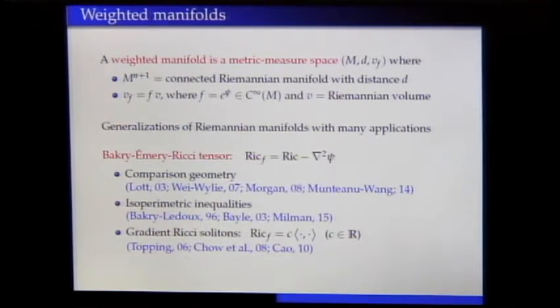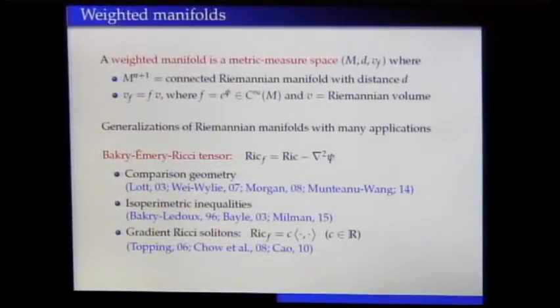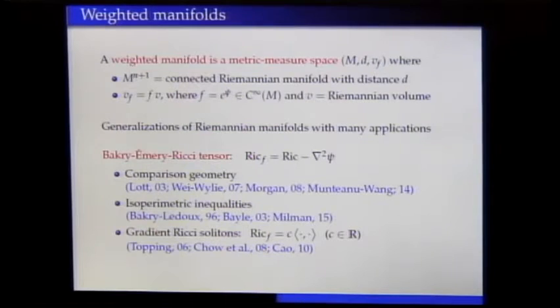The Bakry-Emery Ricci tensor is useful to provide generalizations to weighted manifolds of some well-known comparison results in classical Riemannian geometry, like Myers' theorem or Bishop's theorem. It also allows generalizations of classical isoperimetric inequalities like the Lévy-Gromov inequality. Moreover, thanks to this tensor, important objects like gradient Ricci solitons can be characterized: such a soliton is a weighted manifold where the Bakry-Emery Ricci tensor is proportional to the Riemannian metric, generalizing Einstein manifolds and playing an important role in understanding singularities of the Ricci flow.